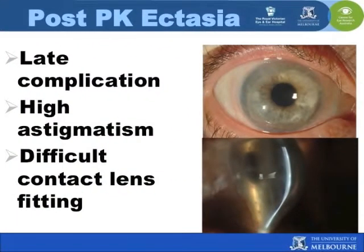Recurrence of keratoconus in the donor tissue and progression of keratoconus in the host cornea after keratoplasty has been known to occur. This recurrence has been attributed to various factors such as residual disease in the host periphery and graft-host malapposition.